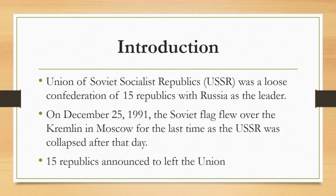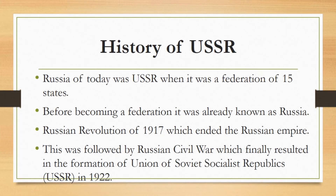This was the end of the tussle between the communist USSR and capitalist US, with the US victory. Russia of today was USSR when it was a federation of 15 states, but before becoming a federation it was already known as Russia. The story began with the Russian Revolution of 1917, which ended the Russian Empire, followed by the Russian Civil War, which finally resulted in the formation of the USSR in 1922.